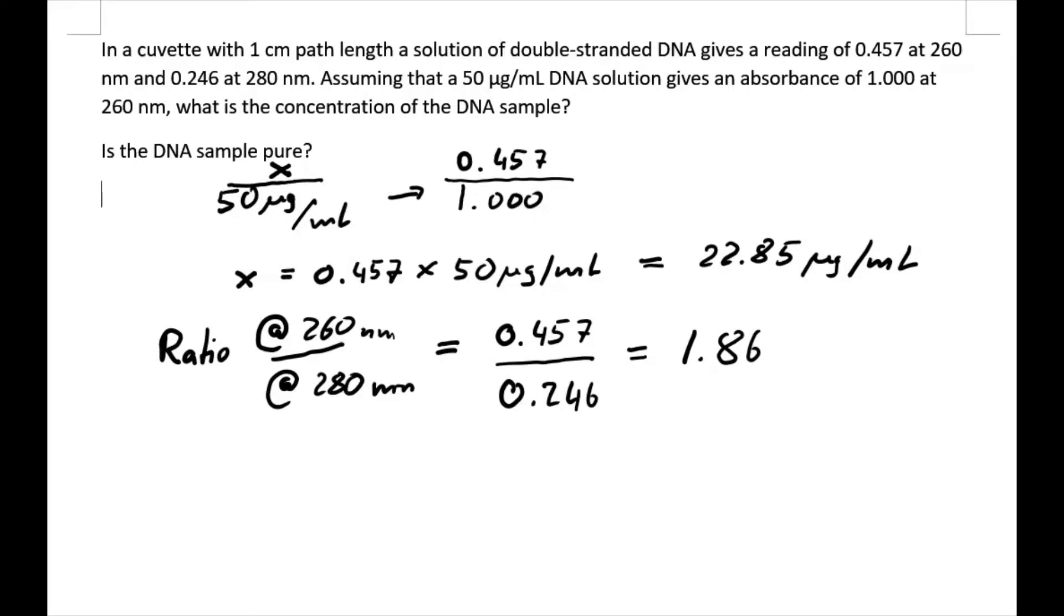If the ratio is larger than 1.7 and smaller than around 1.9, the sample is considered fairly pure.